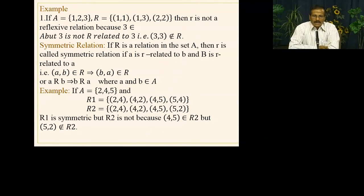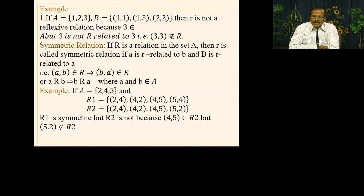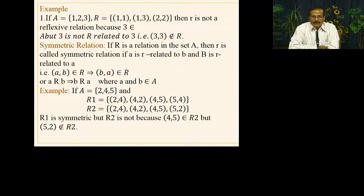Looking at R1: we have (2,4) and (4,2), (4,5) and (5,4) — so R1 is symmetric. But in R2, we have (4,5) and the next element is (5,2). There is no (5,4) for us, which could tell us that symmetry is being followed. With (4,5) and (5,2) but no (5,4), our second relation R2 is not symmetric.